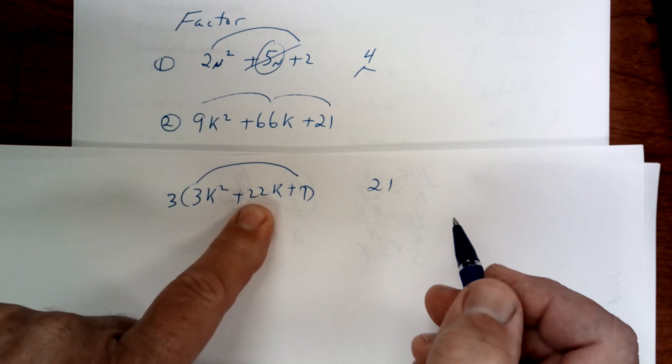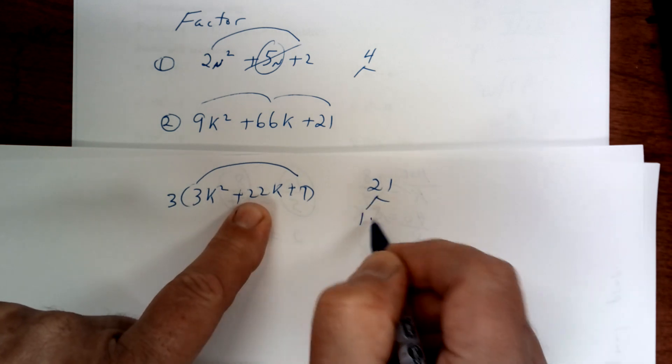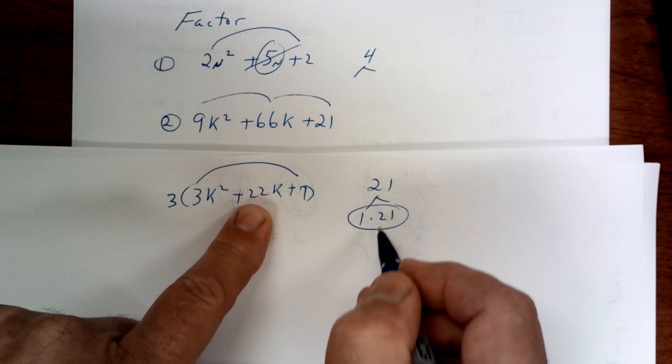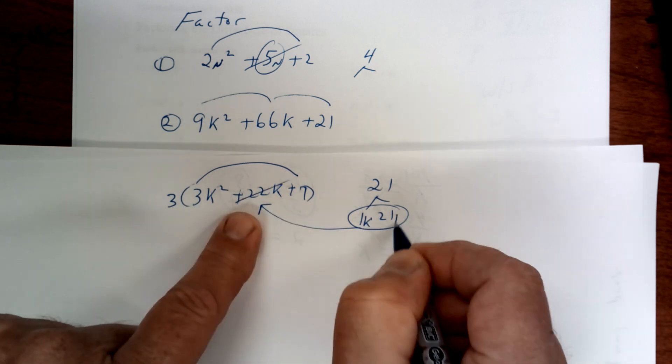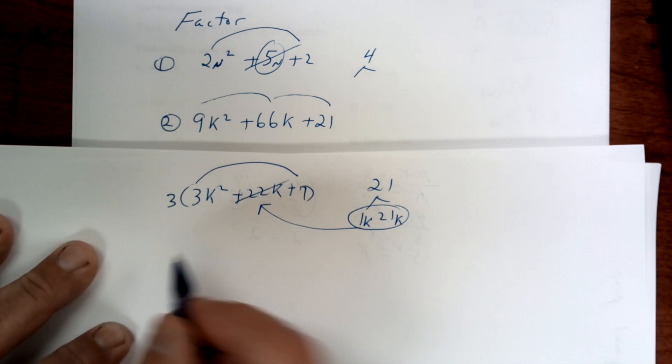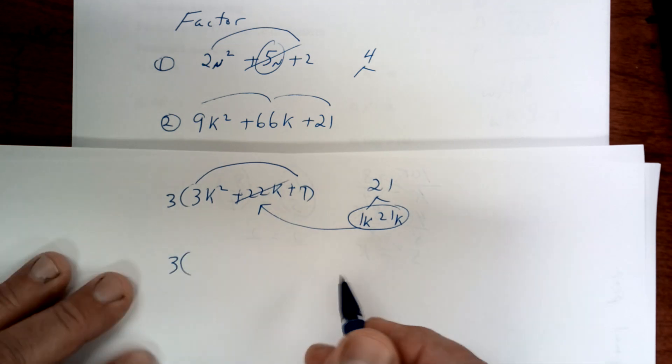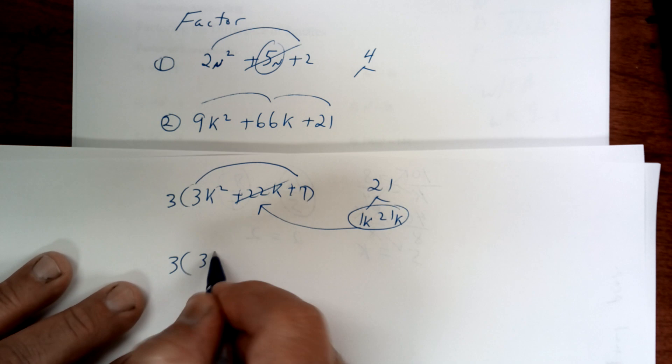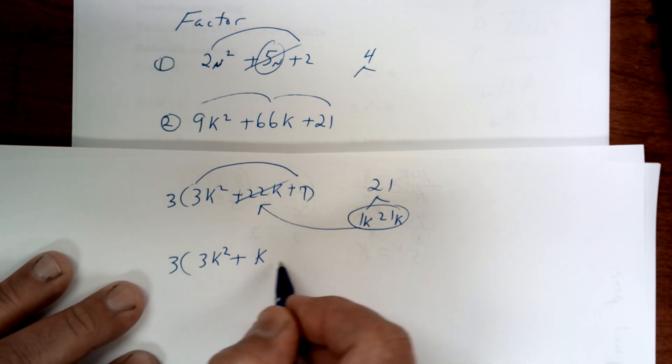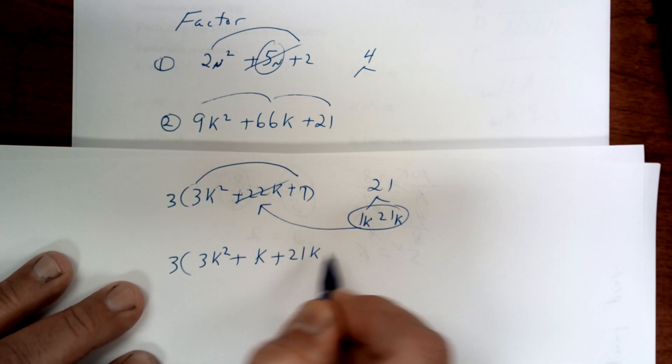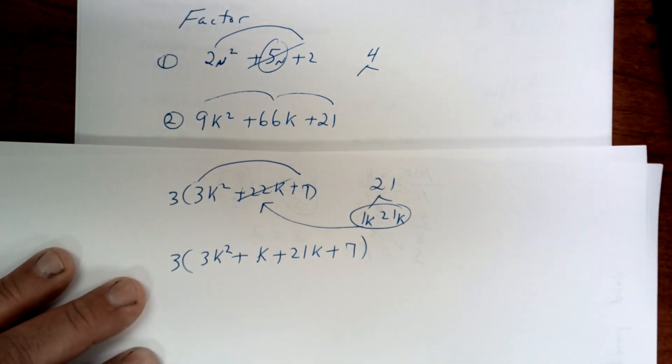You can't take anything else out. 7 times 3 is 21, so you're going to factor that. It's got to be 1 times 21 that's going to add up to give you 22. So you're going to substitute these two in place of that one and work it the same way. Keep bringing that 3 down, so it's going to be 3k² + 1k + 21k + 7.